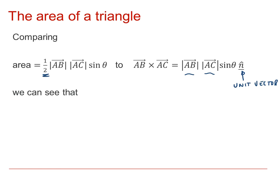So therefore we can say that the area of the triangle is equal to one half the size of the vector product between AB and AC. So that will be equal to the area of the triangle ABC.